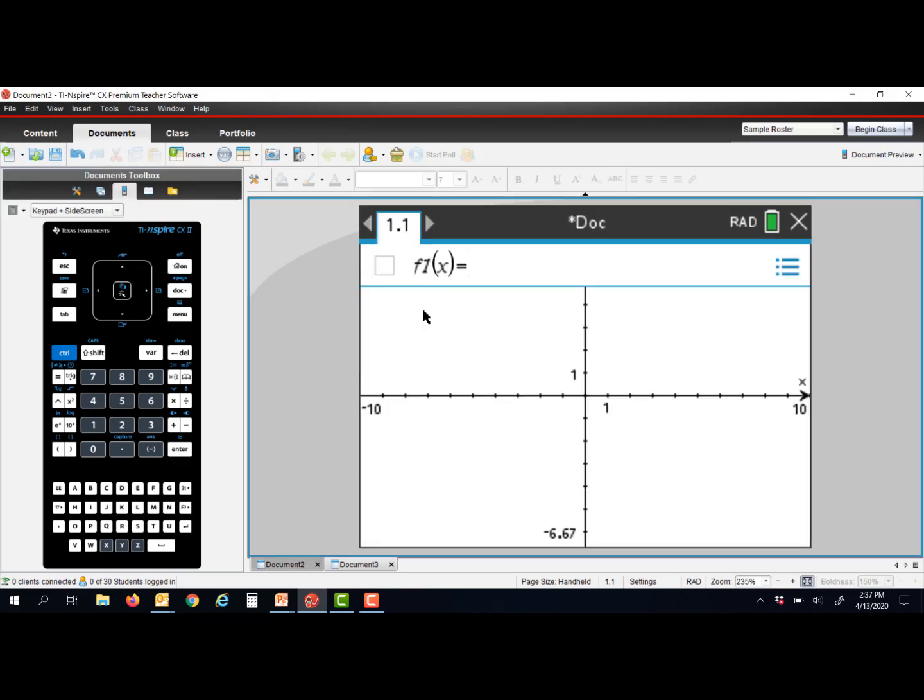For this first example, I'm going to show you how to use an auto slider in a linear function. When I add a graphs page, I'm going to be automatically prompted to enter the function at the top of the page for f1 of x. In this case, I'm going to use mx plus b. But when I type it in, I'm going to type m times x plus b, and I'll explain why in just a minute.